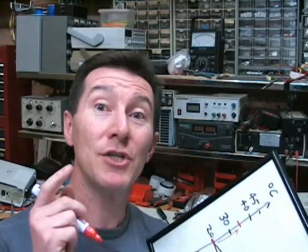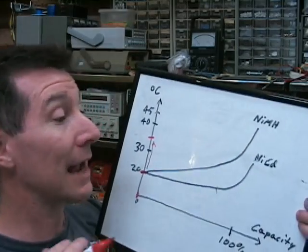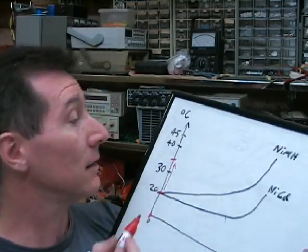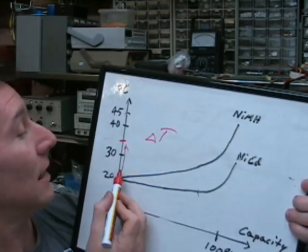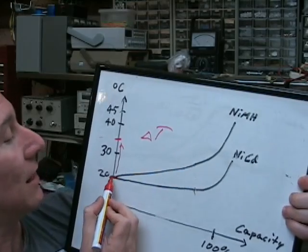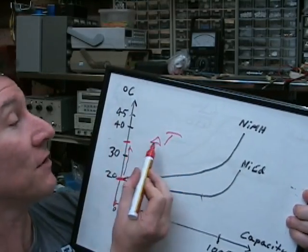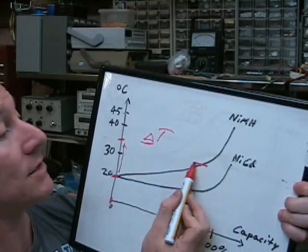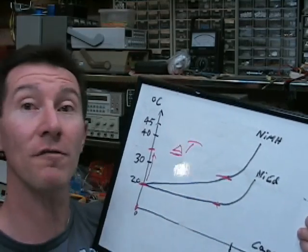Now, there are actually two different methods of doing temperature cutoff. Now, the first one is called delta T, it's called delta T temperature sensing. And basically, at the start of the charging, it takes a reading and then it measures the difference, or the delta, in the temperature over the time. So once it's increased 15 degrees or something like that, it'll switch off.